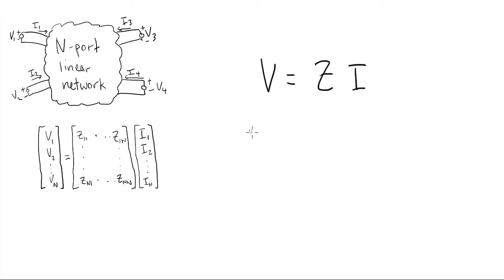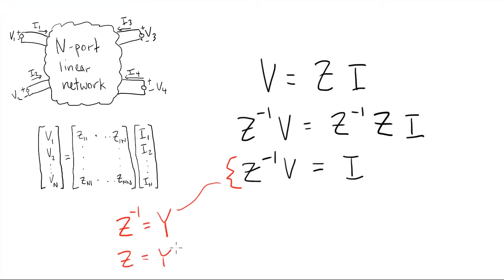If we write it as V equals ZI, then we can multiply on both sides by the inverse of Z. And if we define this new parameter Y as the inverse of Z, this matrix is the Y parameters, or the admittance parameters.